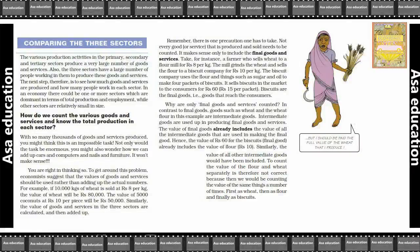Comparing the three sectors, the various production activities in the primary, secondary and the tertiary sectors produce a very large number of goods and services. Jo bhi production activities hoti hai, alag-alag teen sectors mein — primary, secondary aur tertiary — bahut badi sankhya mein woh goods aur services ko banaati hai.